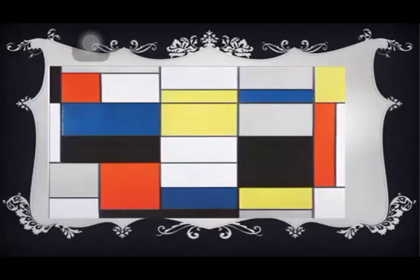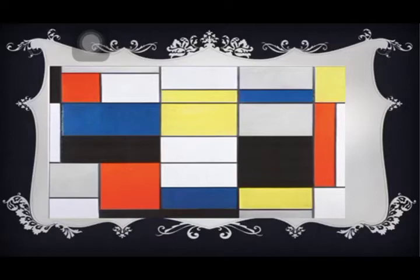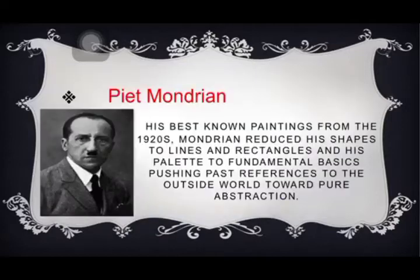This is called Composition A, made in 1920. It's non-objective in nature, making no reference to anything beyond itself. It uses black and shades of grey. More basic compositions use only solid black or primary colors. This is made by Piet Mondrian.